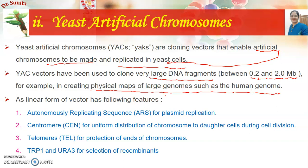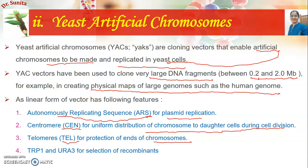Yeast artificial chromosomes have the following features. First, autonomous replicating sequences (ARS), which are necessary for replicating the plasmid. Second, a centromere for uniform distribution of chromosomes to daughter cells during cell division. Third, telomeres for protection of the ends of the chromosomes. Fourth, TRP1 and URA3 genes for selection of recombinants.